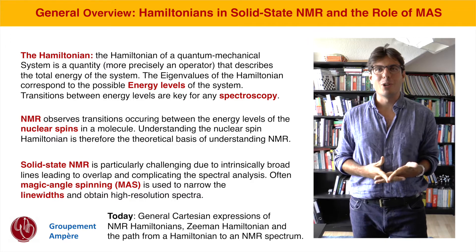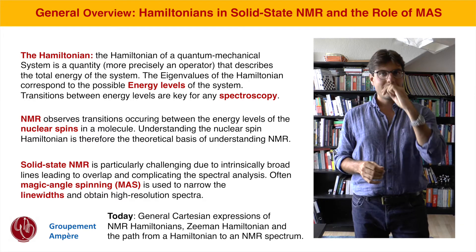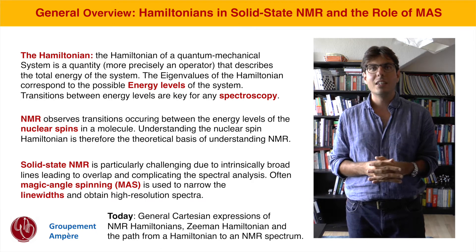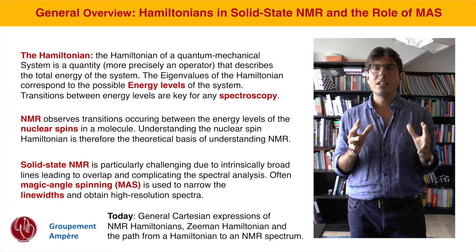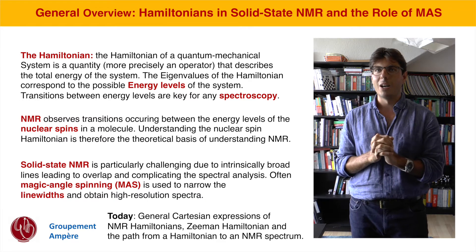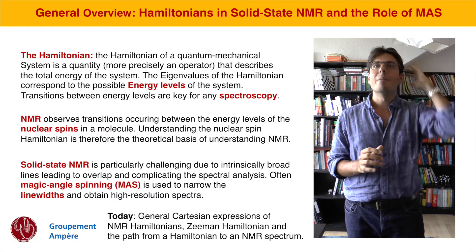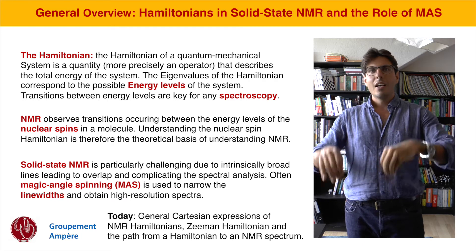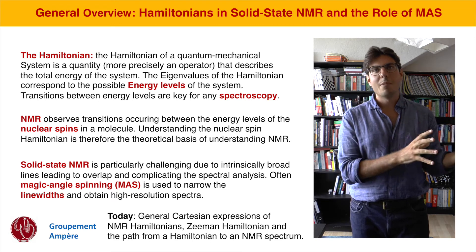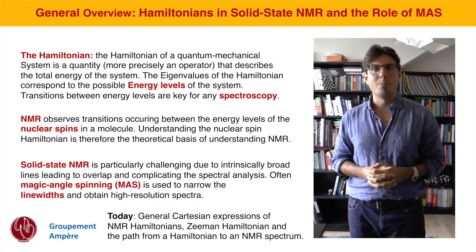Our objectives today are to give first of all some very general expressions for writing down Hamiltonians in Cartesian coordinates — general expressions that can be applied to any Hamiltonian encountered in NMR. Then we want to pick out a very specific example, the Zeeman interaction, and use it to understand the relation between the NMR Hamiltonian and the NMR spectrum and how we can use this to predict spectral line positions.